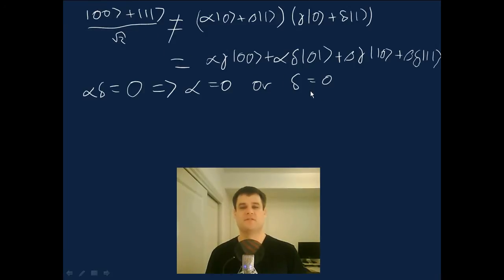And if δ is equal to 0, then the final amplitude, βδ for 1,1, vanishes, and therefore it's not equal to the Bell state. And so, you know, if this is our starting state, it cannot possibly be equal to the Bell state.